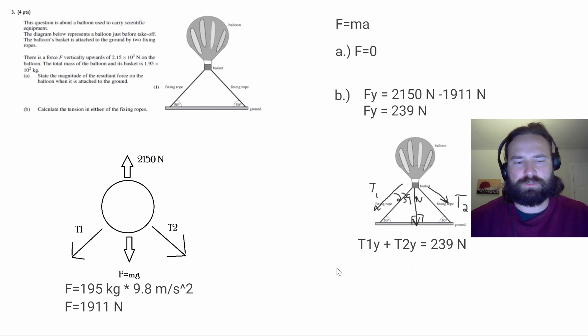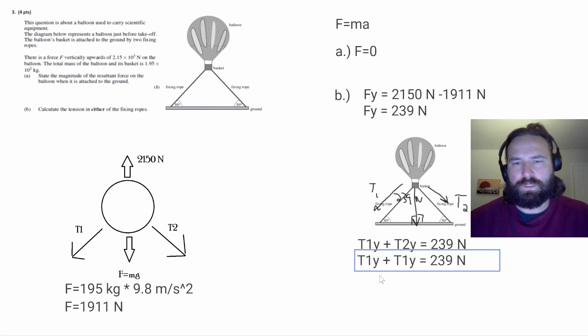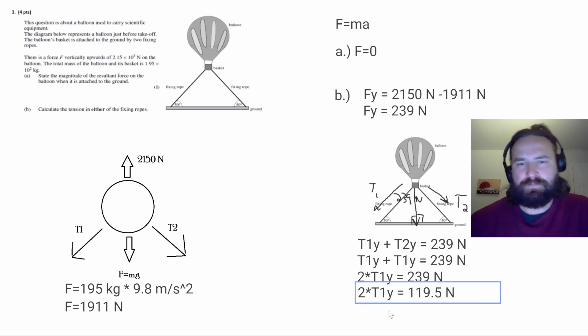So whatever's happening to one rope is happening to the other one in exactly the same way. So we can actually use substitution here to sub T, in this case I'm just going to sub T1Y in for T2Y. And in that case, we can just add these two together now because these are the same variable. And so two times T1Y is going to equal that 239 newtons. So the force of T1Y is just this number divided in half and we're going to get 119.5 newtons.